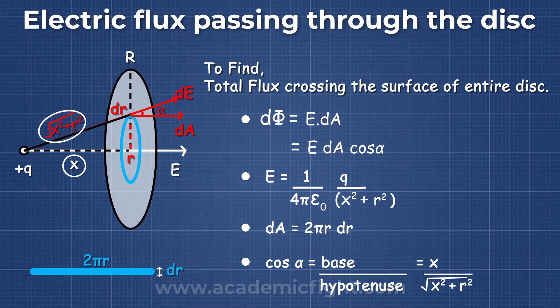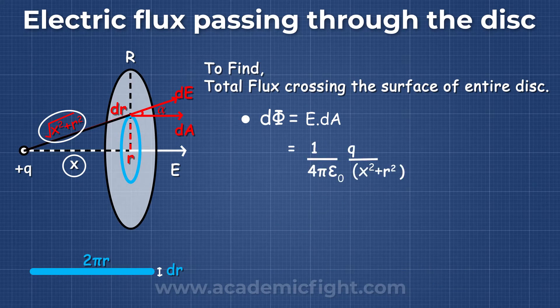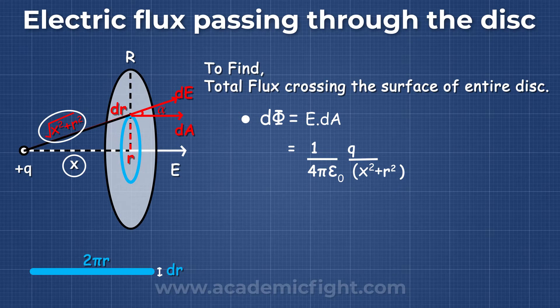Putting this value of E, dA, and cos alpha in dφ, we get dφ = 1/(4πε₀) × q/(x² + r²) × 2πr dr × x/√(x² + r²).